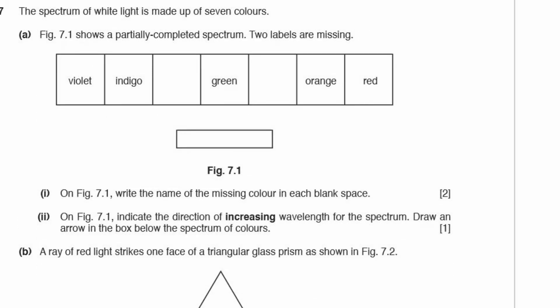Question 7: the spectrum of white light is made up of seven colours. Figure 7.1 shows a partially completed spectrum with two labels missing. The missing colours are yellow and blue. Indicate the direction of increasing wavelength: increasing wavelength means decreasing energy. Red has less energy than blue, so the arrow points towards red.